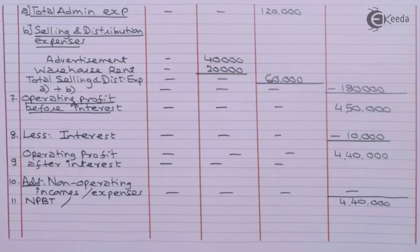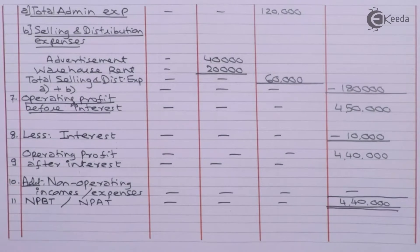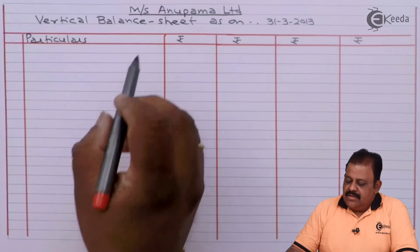In this question they have not given provision for tax, so the same figure will be net profit after tax: 4 lakhs 40,000. We have completed the income statement. Let us proceed to complete the balance sheet.